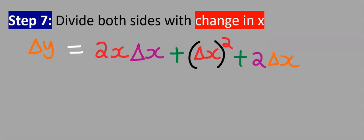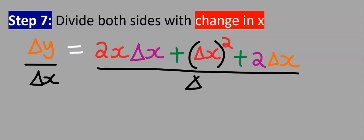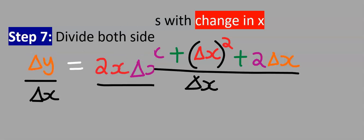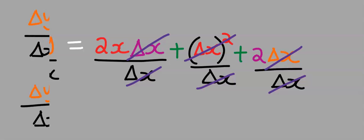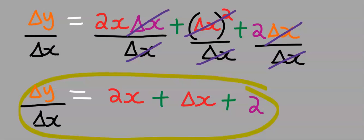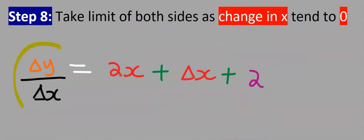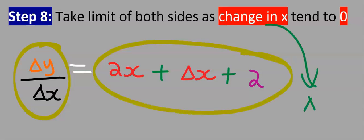Step number seven: divide both sides by Δx. I will divide here by Δx and I will divide all of this side by Δx. We can write it distributed under each term — both forms are the same. One Δx cancels with another Δx, and we are left with the simplified expression.